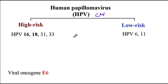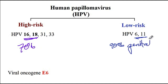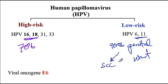Human papillomavirus is divided into two different subtypes. The high-risk subtype comprises HPV 16, 18, 31, and 33. In fact, HPV 16 and 18 account for 70% of cases of cervical cancers as well as anal cancers. There is also a low-risk subtype — HPV 6 and 11 — which account for 90% of cases of genital warts, or condyloma acuminata, which have a very low chance of progression into squamous cell carcinoma.